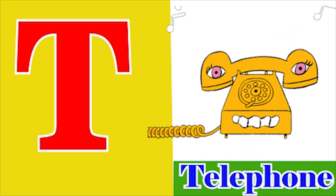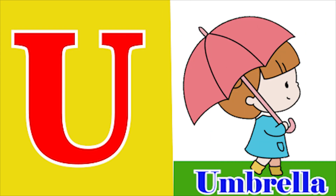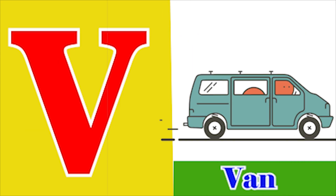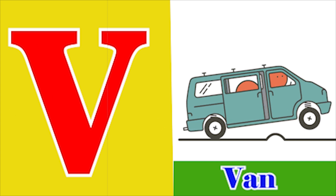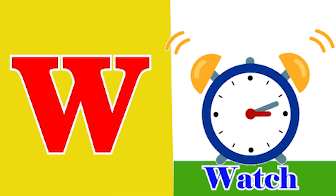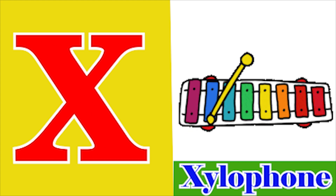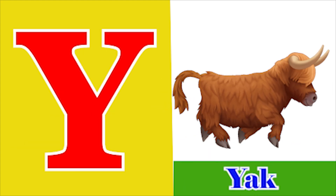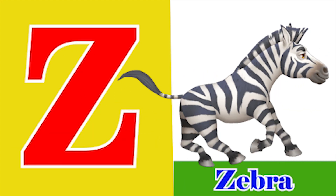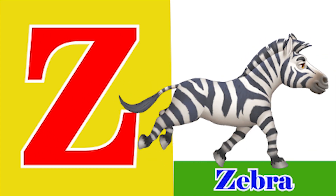T for telephone, U for umbrella, V for van, W for watch, X for xylophone, Y for yak, Z for zebra.